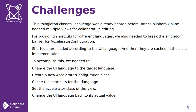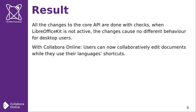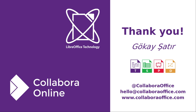To accomplish our goal, we needed to: change the UI language to the target language, create a new accelerator configuration class, cache the shortcuts for that language, set the accelerator class of the view, and change the UI language back to its actual value. All the changes to the core API are done with checks. When the LibreOffice kit is not active, the changes cause no different behavior for desktop users. But with CollaborOnline, users can now collaboratively edit documents while using their own language's shortcuts. Thank you for listening.